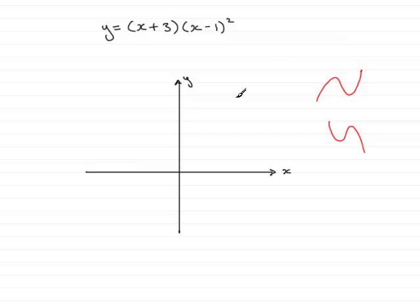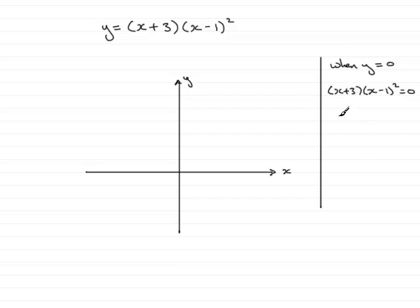Well, it crosses the x-axis when y is 0. So if we were to just say, when y equals 0, we would have x plus 3 multiplied by x minus 1, all squared would equal 0. So therefore, x plus 3 would equal 0, or x minus 1 would equal 0. What that means is that x would equal negative 3, or x would equal 1.